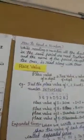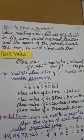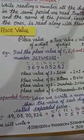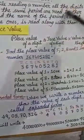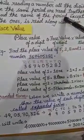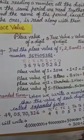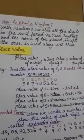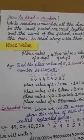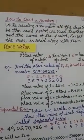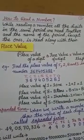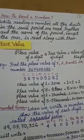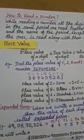When reading a number, all the digits in the same period are read together, and the name of the period — except ones — is read along with them. For example: eighteen crores, thirty-six lakhs, seventy-nine thousand, two hundred forty-five. So eighteen is read with the period crores, thirty-six with lakhs, seventy-nine with thousands, and two hundred forty-five for ones.